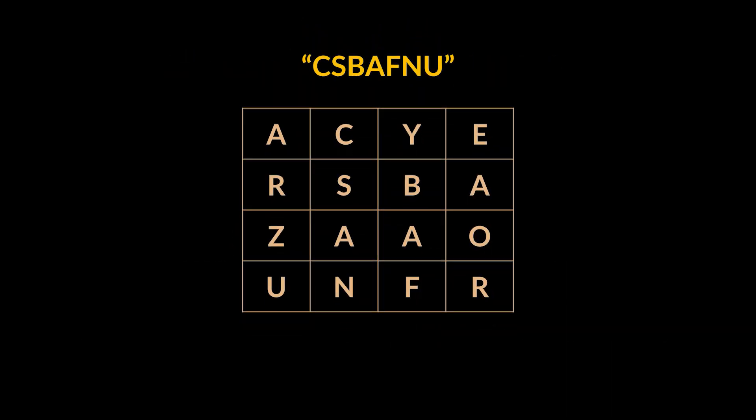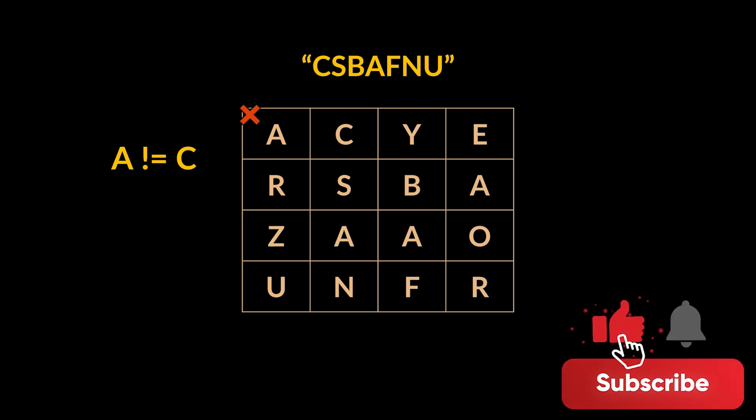Okay, before ending the video let's further visualize the algorithm we just implemented with the help of the same example we previously had. We will start by iterating over the cells of the grid. The first cell contains the letter A. A is different from C, which is the first letter of the given word, hence there is no need to start our iterations from it and we can proceed to the next cell.